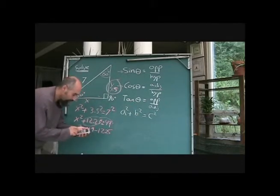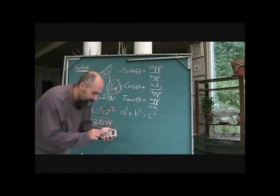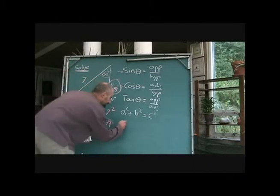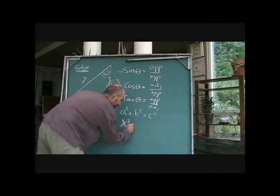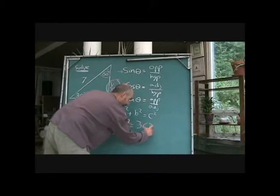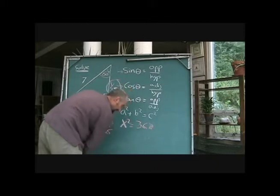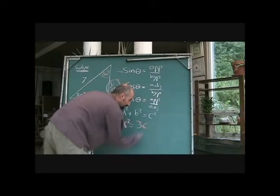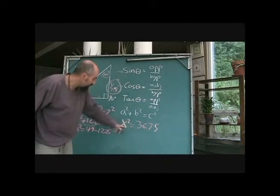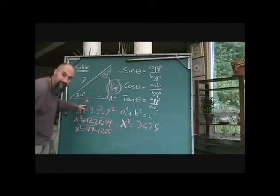So 49 minus 12.25 is 36.75. So right now we got x² = 36.75.